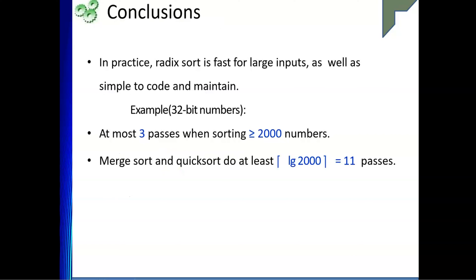Radix sort is faster for large inputs and is simple and easy to implement. If you have more than 2000 numbers, it takes only about three passes. Compare that to quicksort or merge sort which would take around 11 passes for the same input. So whenever you have a large set of numbers, it is always better to sort using radix sort.